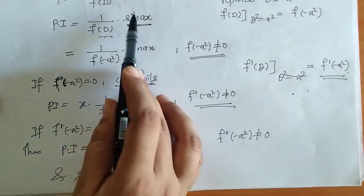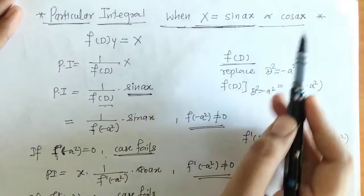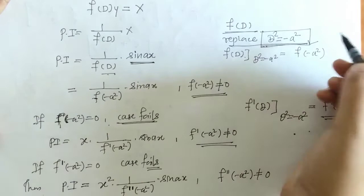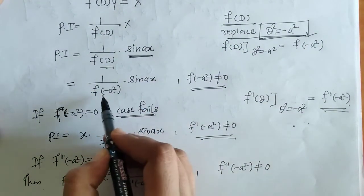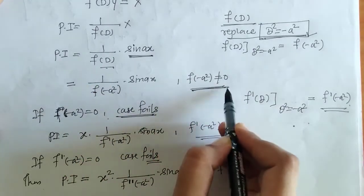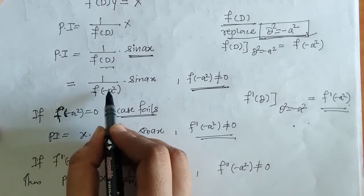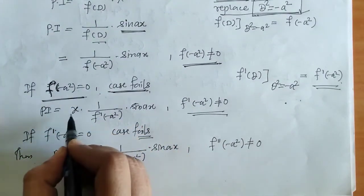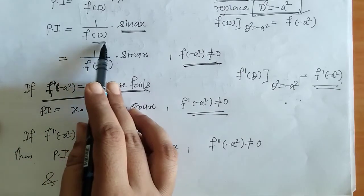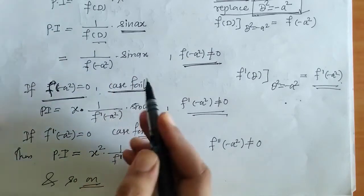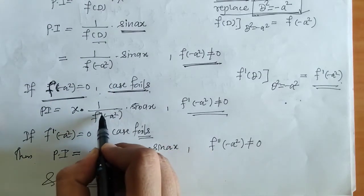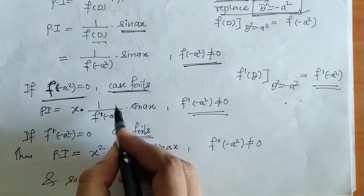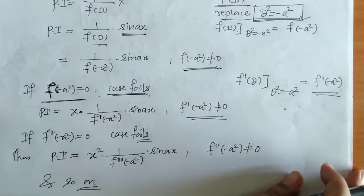So we proceed for PI in this way. When X equals sin or cos, we replace D² by minus a². We get the result, and the condition is that this denominator should not be zero. If f(-a²) gets zero, we multiply by x, take the derivative to get f'(D), replace D² equals minus a², giving f'(-a²). Again if that gets zero, we multiply by x again and continue until we get a finite PI.